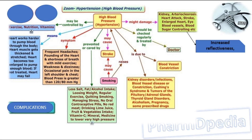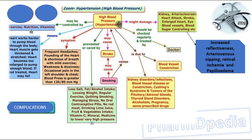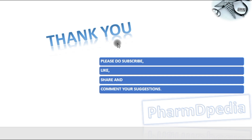Complications of hypertension include kidney damage, atherosclerosis, and heart attack. Increased hypertension in the brain may lead to stroke through hemorrhage. Hypertension also damages the eye through increased arteriovenous nipping, retinal ischemia, and papilloedema, which damages the retina and can finally lead to blindness.